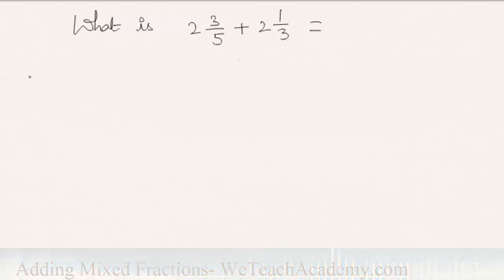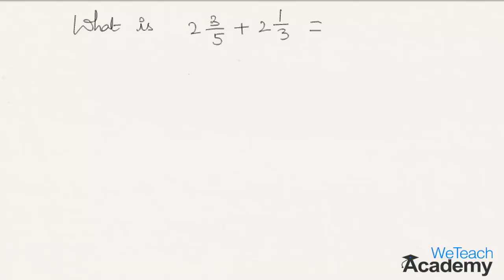2 3/5 is nothing but 5 times 2 is 10 plus 3, that is 13/5. And 2 1/3 is nothing but 3 times 2 is 6 plus 1, that is 7/3.